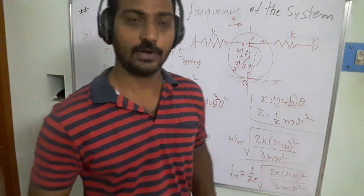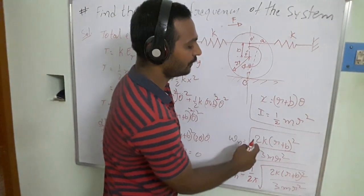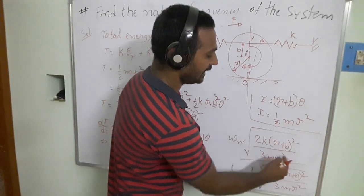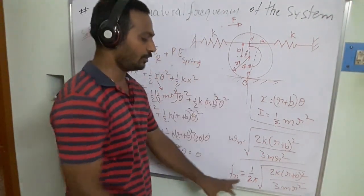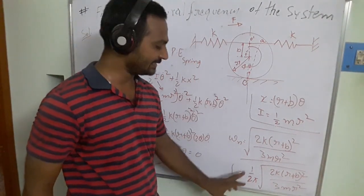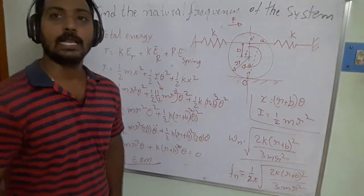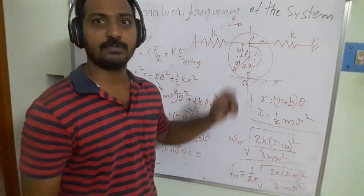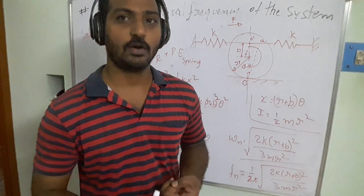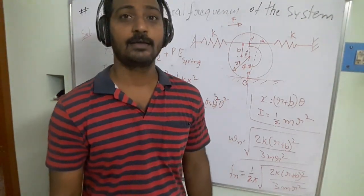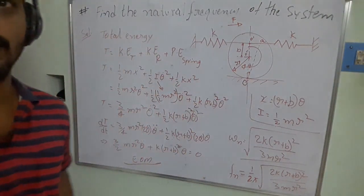From this equation of motion, we derive the circular natural frequency: ωn = √(2k(r + b)² / 3mr²). The natural frequency of the system is fn = (1/2π)·ωn = (1/2π)·√(2k(r + b)² / 3mr²). This is how we calculate the natural frequency of a system consisting of two types of kinetic energy — translatory and rotary motion — along with potential energy stored as elastic strain energy in the springs. Thank you.